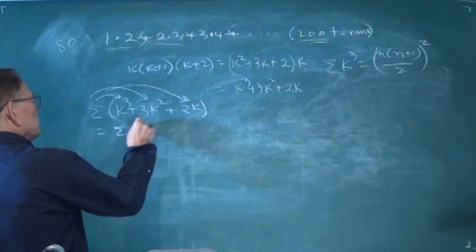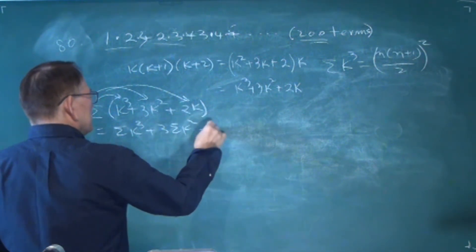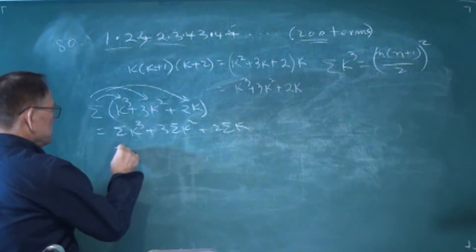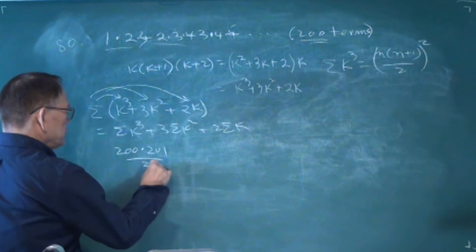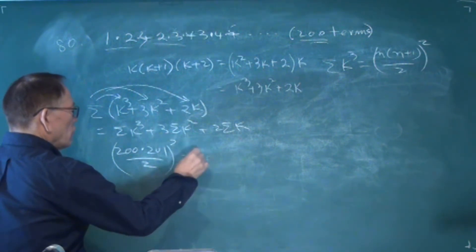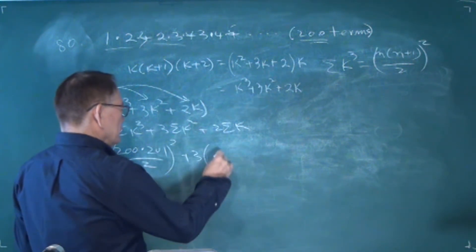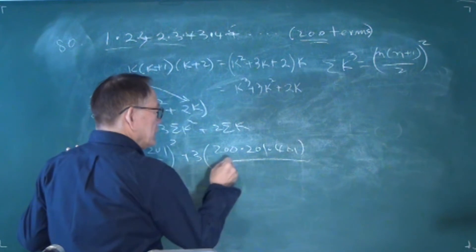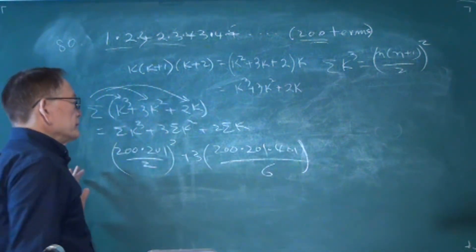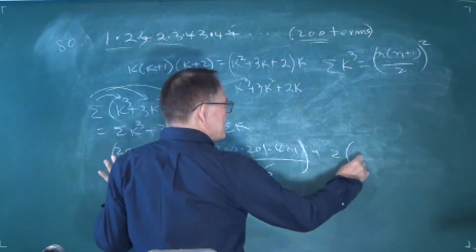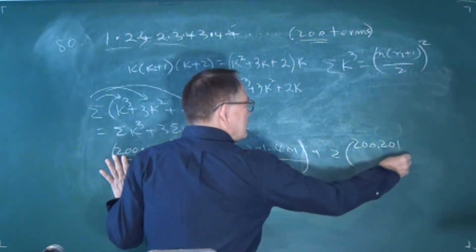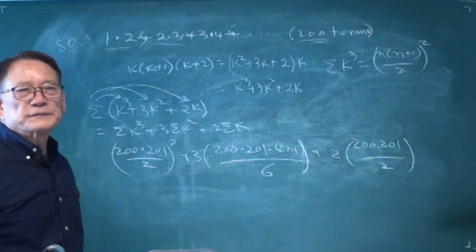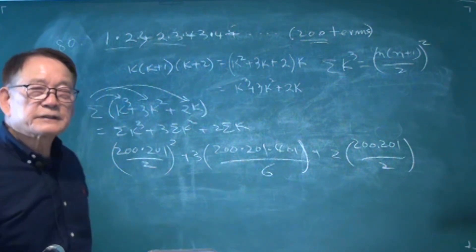Without rewriting the distribution, we have sigma k cubed plus 3 sigma k squared plus 2 sigma k. Applying the formulas: 200 times 201 divided by 2, all squared, plus 3 times 200 times 201 times 401 divided by 6, plus 2 times 200 times 201 divided by 2. Use your calculator for this. That's the end.